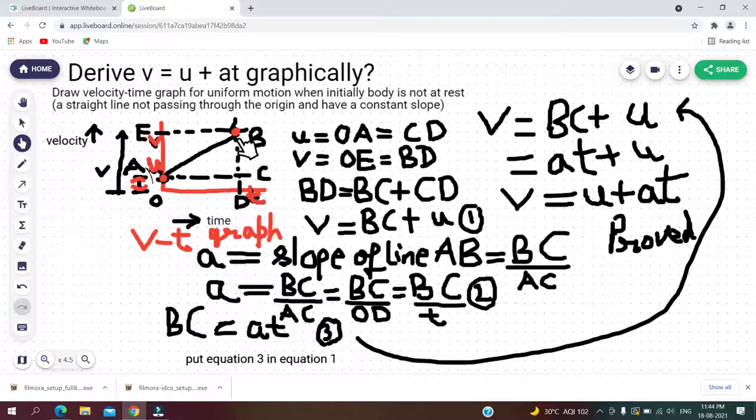Now this BD will be equal to BC plus CD. We are knowing the value of CD, it is equal to u, so replace CD by its value u and name it as equation 1.